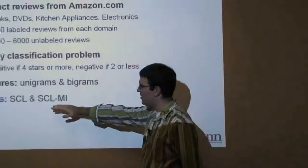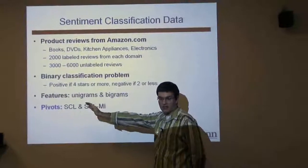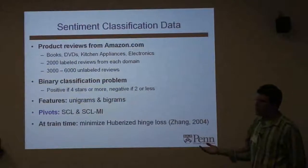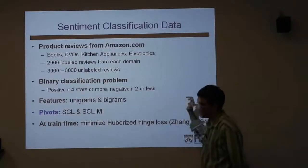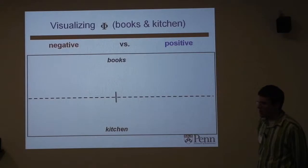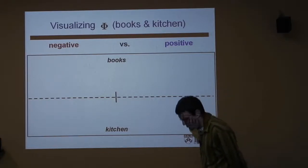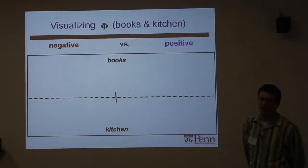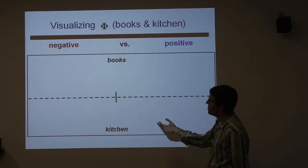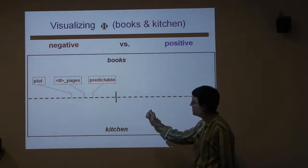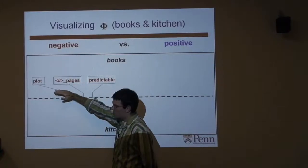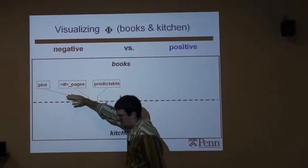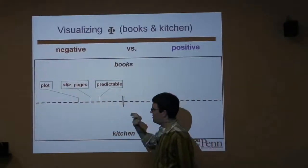For the pivots, we use SCL and SCL-MI. At train time, we minimize a regularized version of the hinge loss — you can use whatever your favorite loss is. Before showing numerical results, let me show a visualization of the kinds of projections that come out of this learning procedure. In the top left are words that only occur in the books domain and are negative under this projection — this is a single column of Phi.